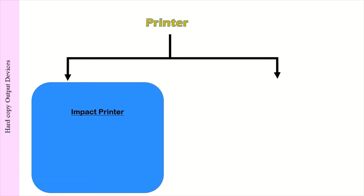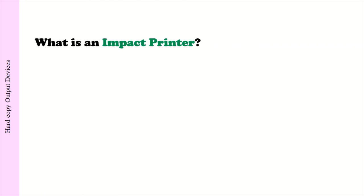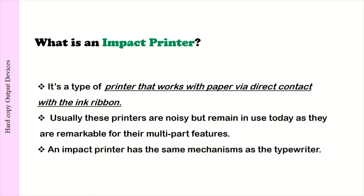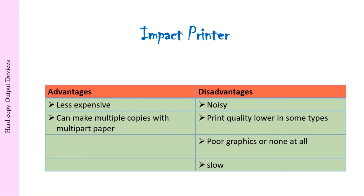Impact printers include dot matrix printer and line printer. Non-impact printers include laser printer, bubble printer, inkjet printer, and thermal printer. An impact printer is a type of printer that works with paper via direct contact with the ink ribbon. Usually these printers are noisy, but remain in use today as they are remarkable for their multi-part features. An impact printer has the same mechanisms as the typewriter. Advantages: less expensive, can make multiple copies with multi-part paper. Disadvantages: noisy, print quality lower in some types, poor graphics or none at all, and slow.